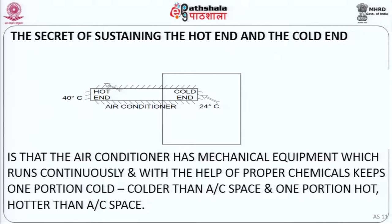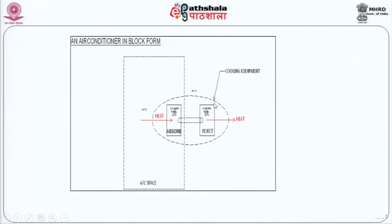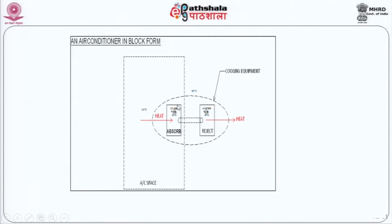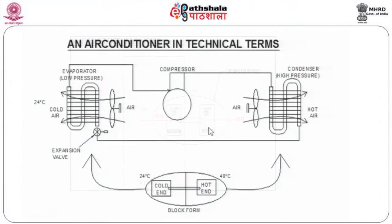Figuratively, this would look like what you see in front of you. You have a hot end kept in the ambient and a cold end kept in the room to be air conditioned. In a box form, the dotted line you see here is your room to be air conditioned. You have a cold end — a box — which picks up the heat. The internal device connecting the cold end to the hot end is the miracle maker, and here you have the outdoor unit which effects the heat rejection.